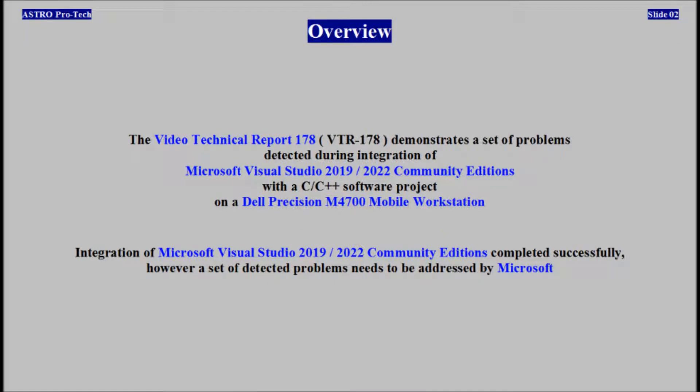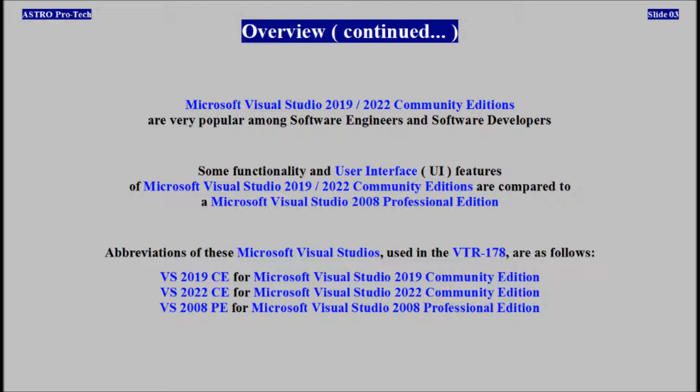Overview. The Video Technical Report 178 demonstrates a set of problems detected during integration of Microsoft Visual Studio 2019 and 2022 Community Editions with a software project on a Dell Precision Mobile Workstation. Integration completed successfully. However, a set of detected problems needs to be addressed by Microsoft software developers. Microsoft Visual Studio 2019 and 2022 Community Editions are very popular among software engineers and developers. Some functionality and user interface features are compared to Microsoft Visual Studio 2008 Professional Edition.